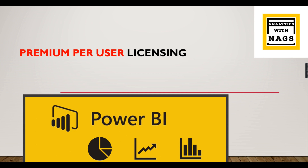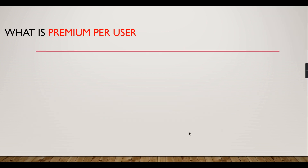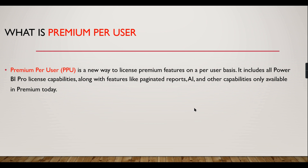That is what we are going to explore in depth in this video — what is the superpower you will get when you have a Premium Per User license. If you are new to this channel, hit the subscribe button to get updates related to Power BI. So, Premium Per User is a new way to access Premium features on a per user basis. It includes all Power BI Pro license capabilities along with features like paginated reports, AI, and other capabilities only available in Premium today.